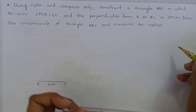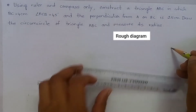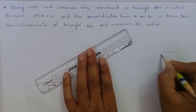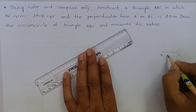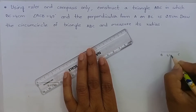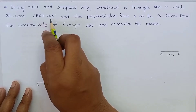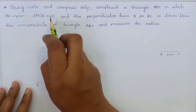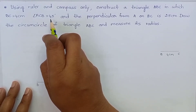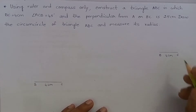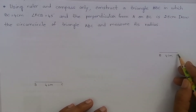Let me draw a rough diagram here. BC is 4 cm. Angle ACB is equal to 45 degrees, which means angle C is equal to 45 degrees. To construct 45 degrees at the point C, let us follow these steps.